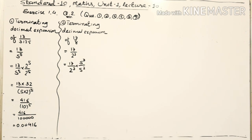So I have multiplied 5 raised to 3 in both the numerator and denominator. In the denominator, 2 raised to 3 times 5 raised to 3 means (2 into 5) raised to 3, which is 10 raised to 3. The main intention of this process is to get the denominator in the form of 10 to the power n.